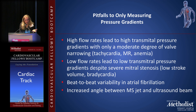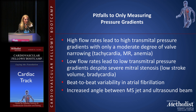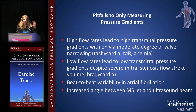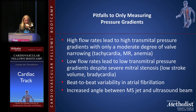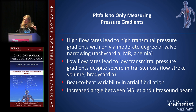There are problems with using mean gradient alone — it won't be accurate 100% of the time. High flow rates lead to really high transmitral pressure gradients even with only mild or moderate valve stenosis. This occurs in tachycardias such as atrial fibrillation with rapid ventricular response or sinus tachycardia, where diastole is really shortened. It also occurs with mitral regurgitation — high flow across the stenotic valve — and in anemia with high output states. The opposite is also true: very low flow rates can produce very low transmitral gradients even with severe mitral stenosis.